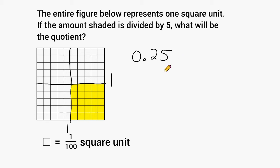Alright, now that we know that the amount shaded is equivalent to 25 hundredths, let's take this amount and divide that into 5 equal groups. Now, if you did have 25 cents in your pocket,